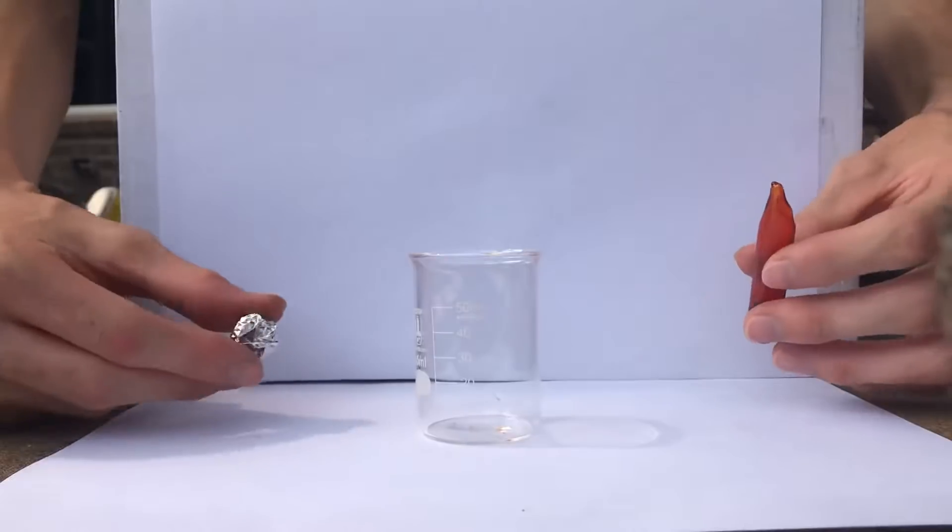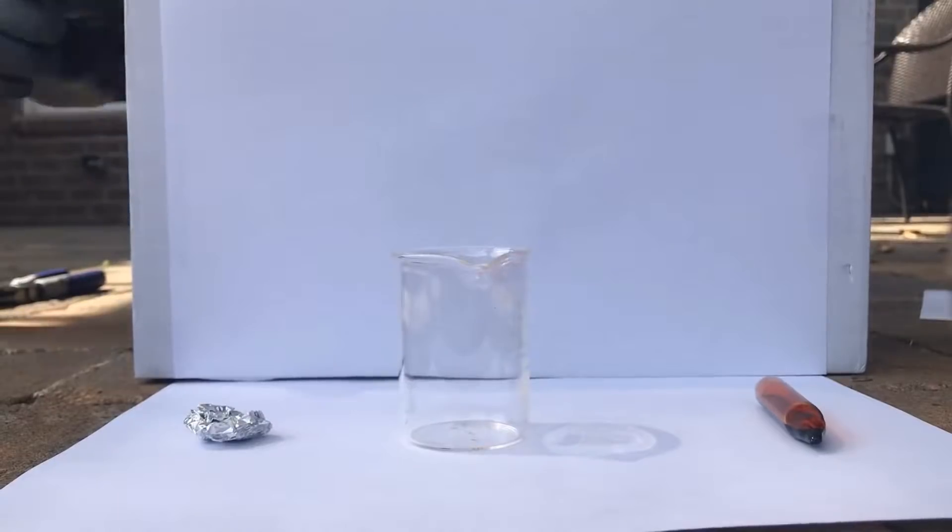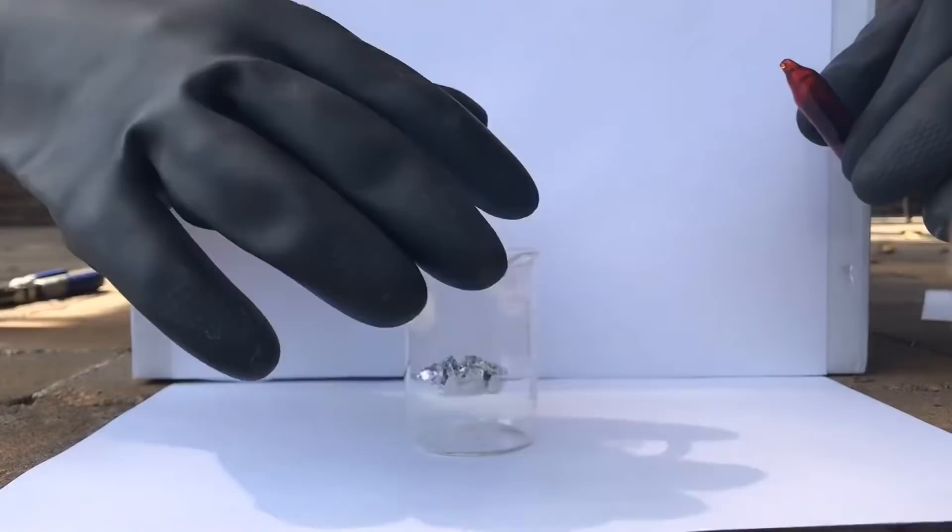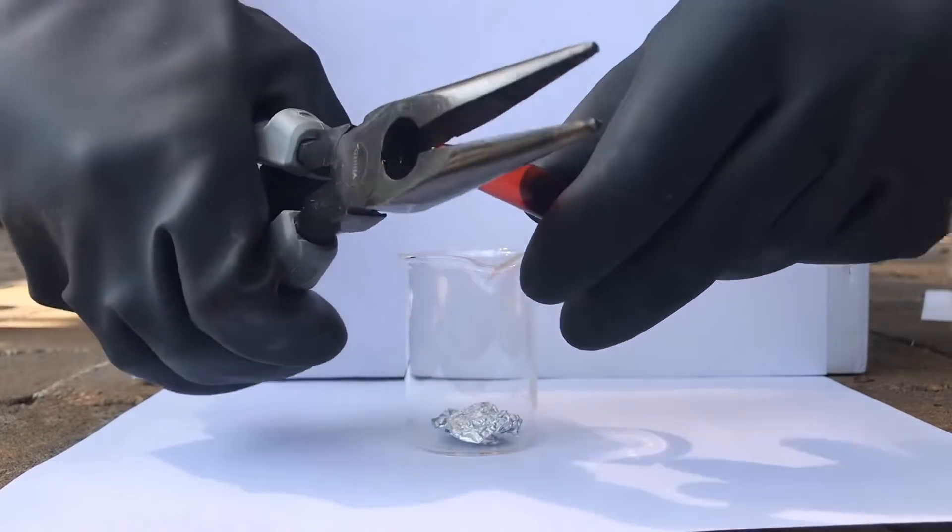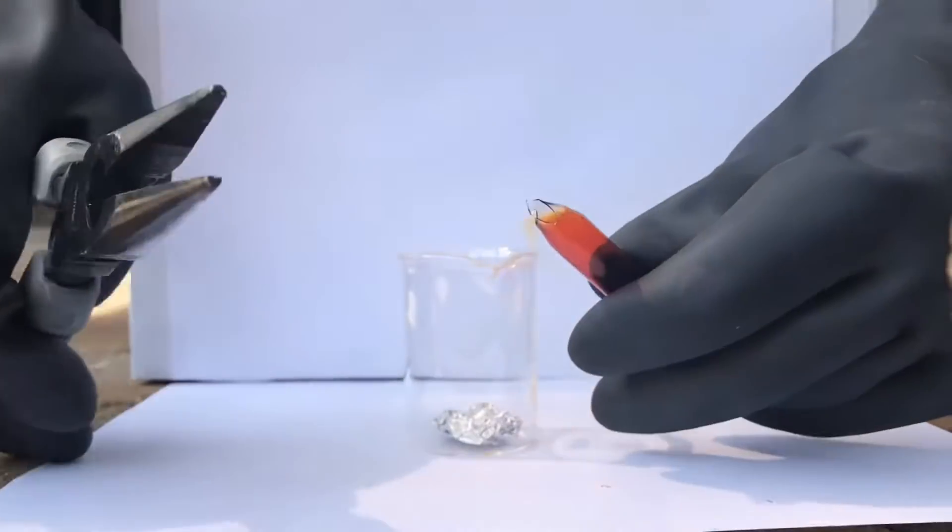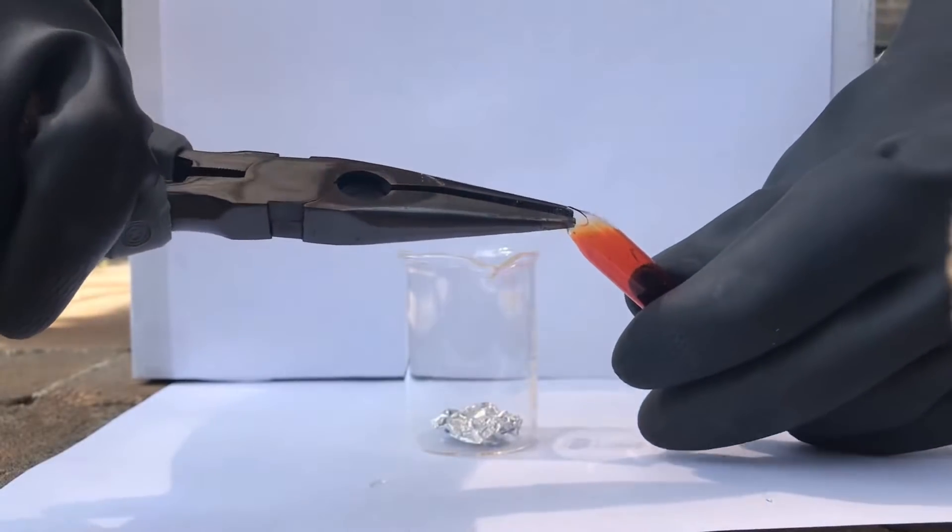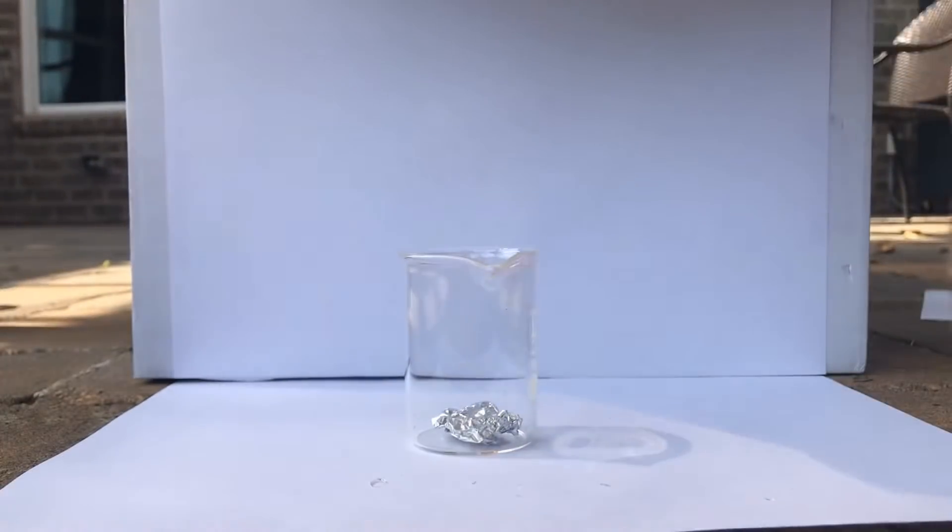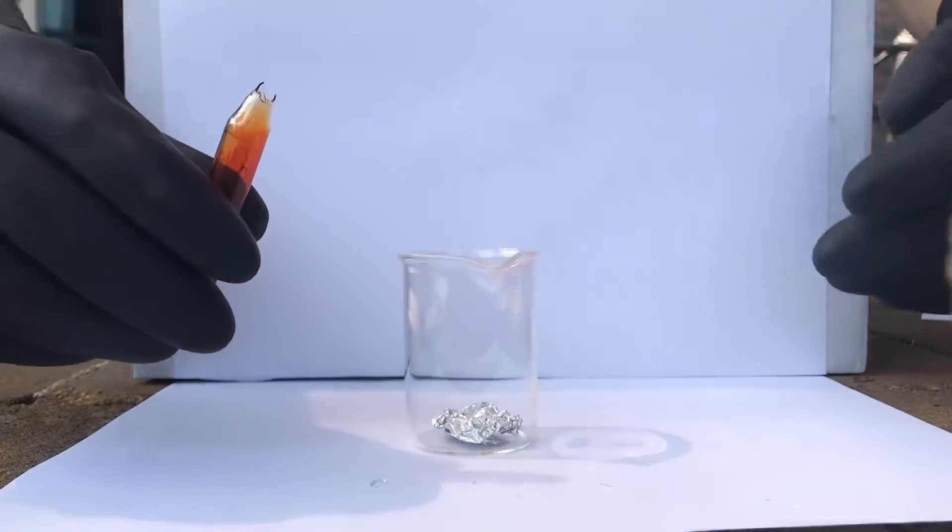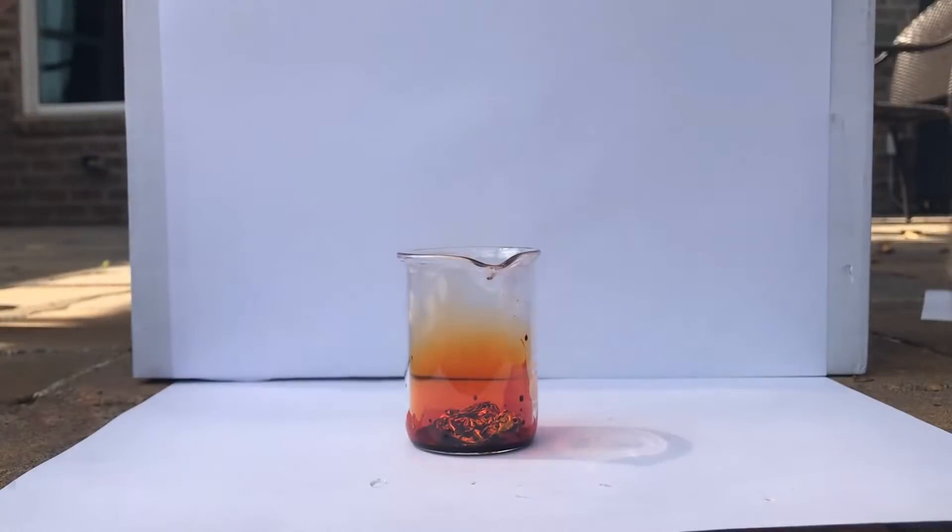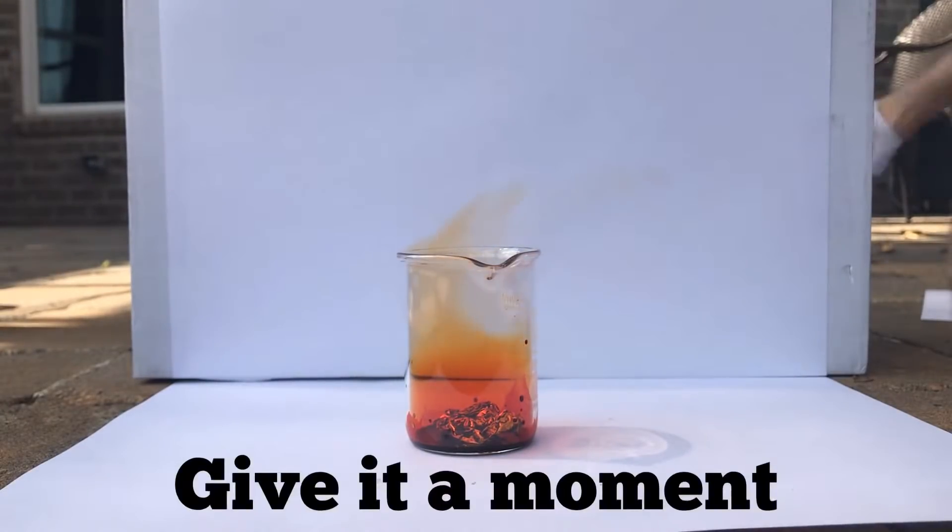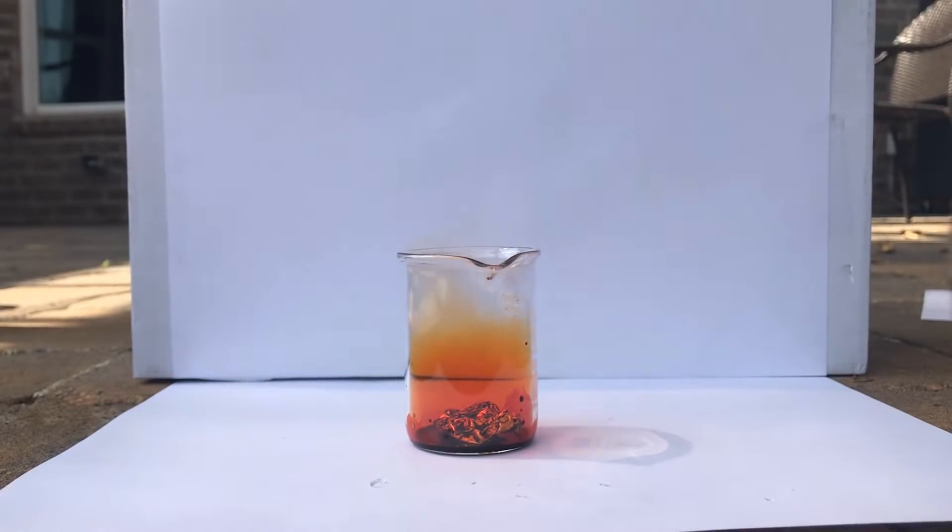Okay, so now we're going to react aluminum foil with bromine. Okay, so in goes the aluminum, let it go. Now to break the bromine. Perfect. Ready? Three, two, one. Back away. I'm not kidding. This is going to be very dangerous.